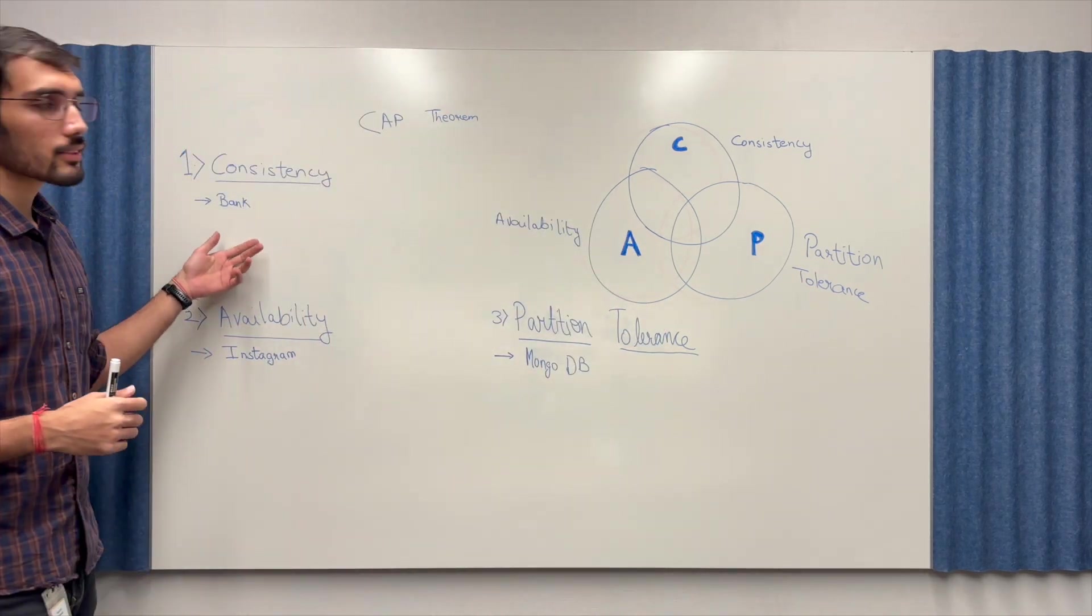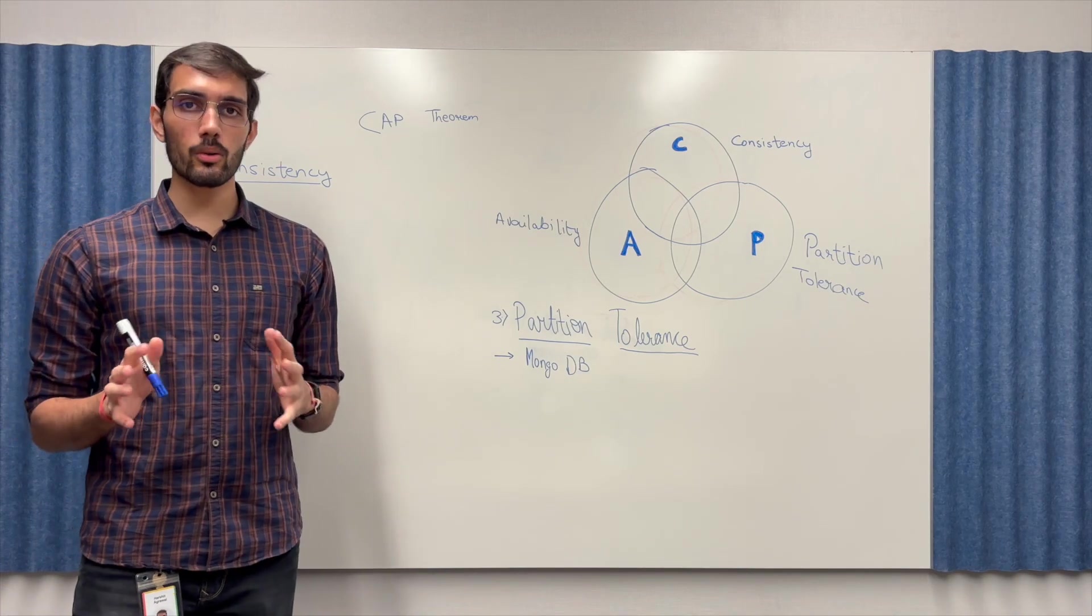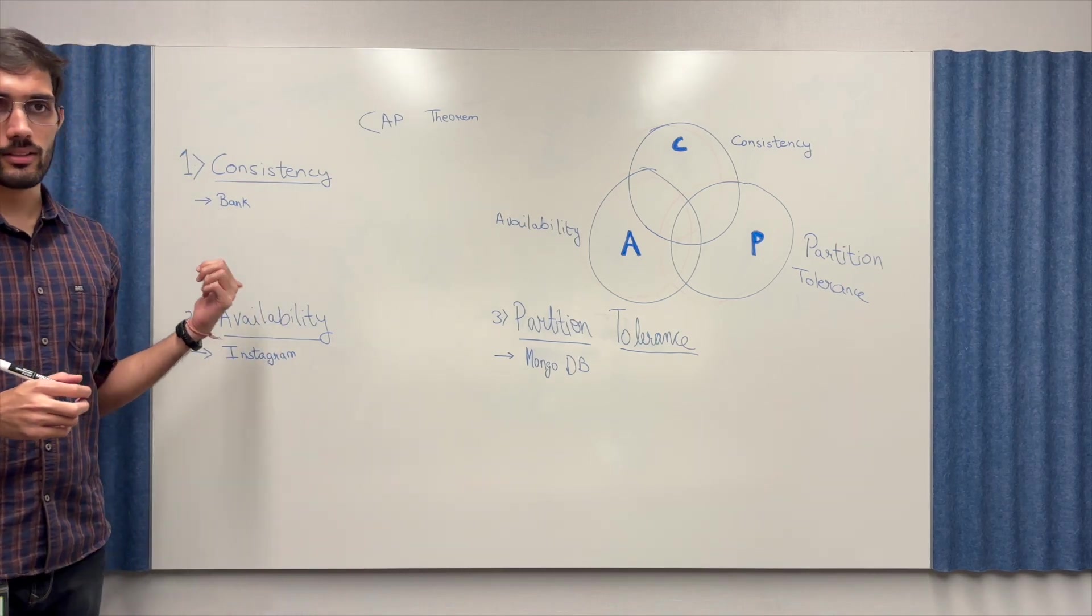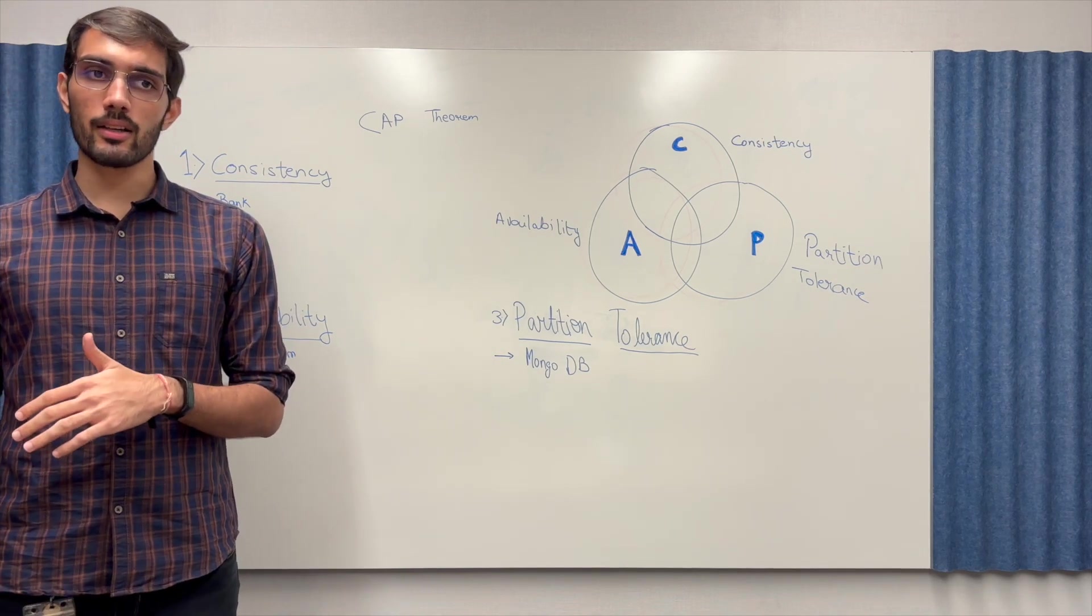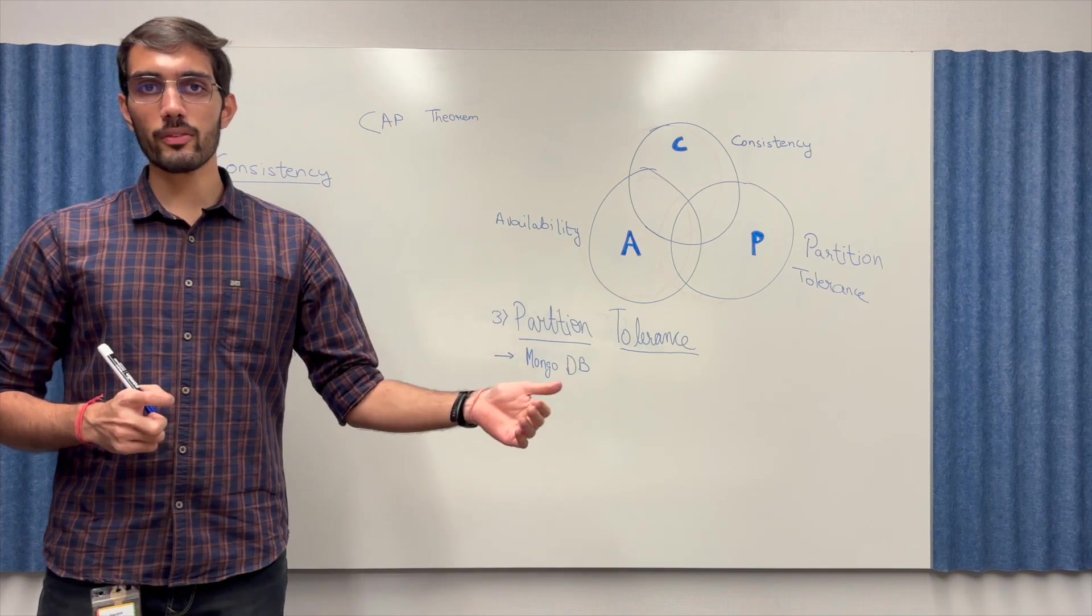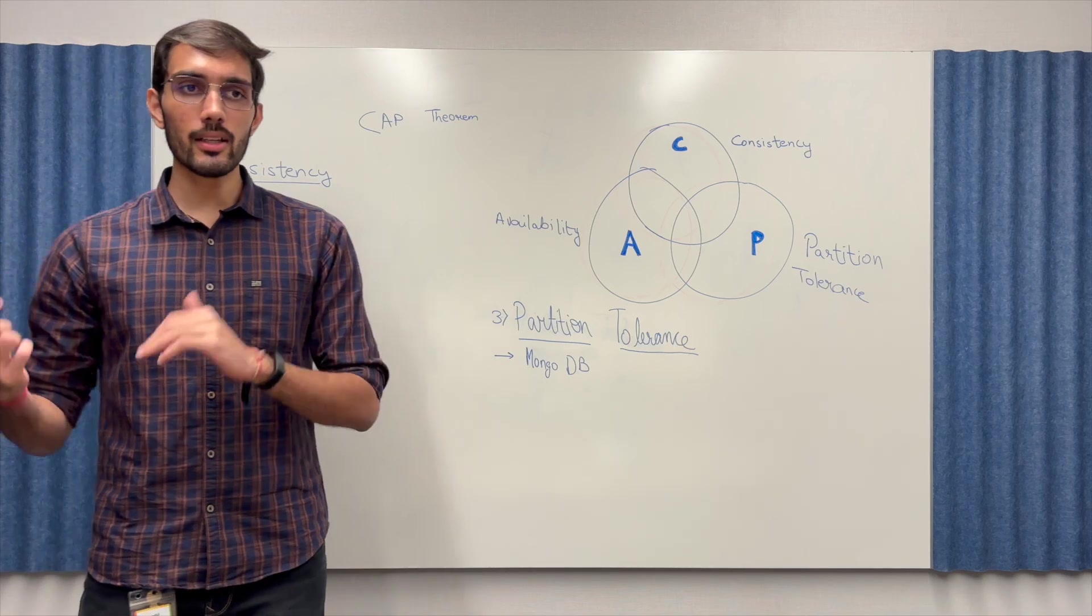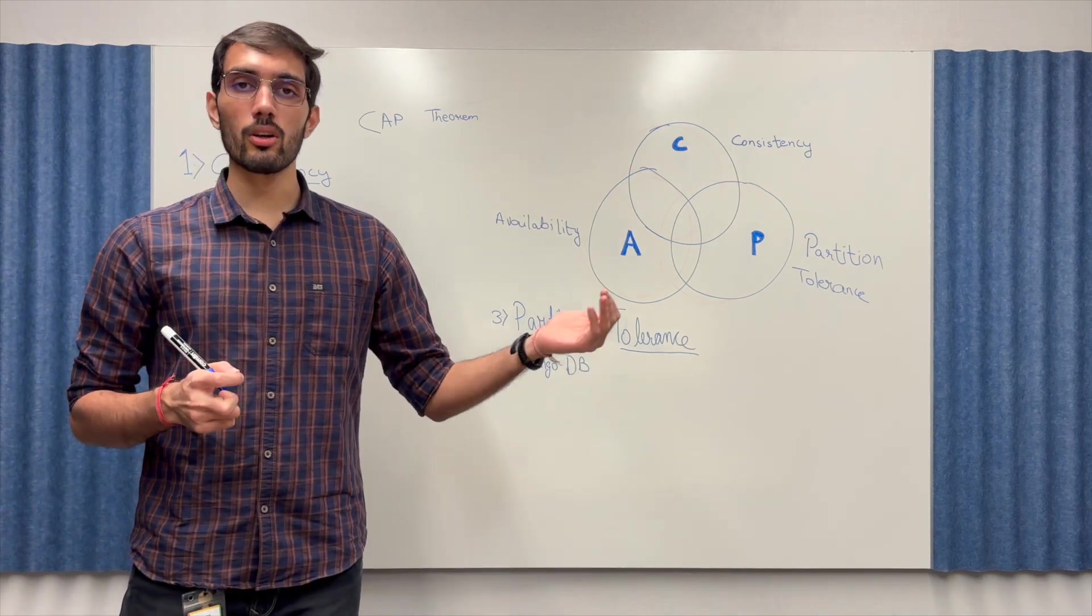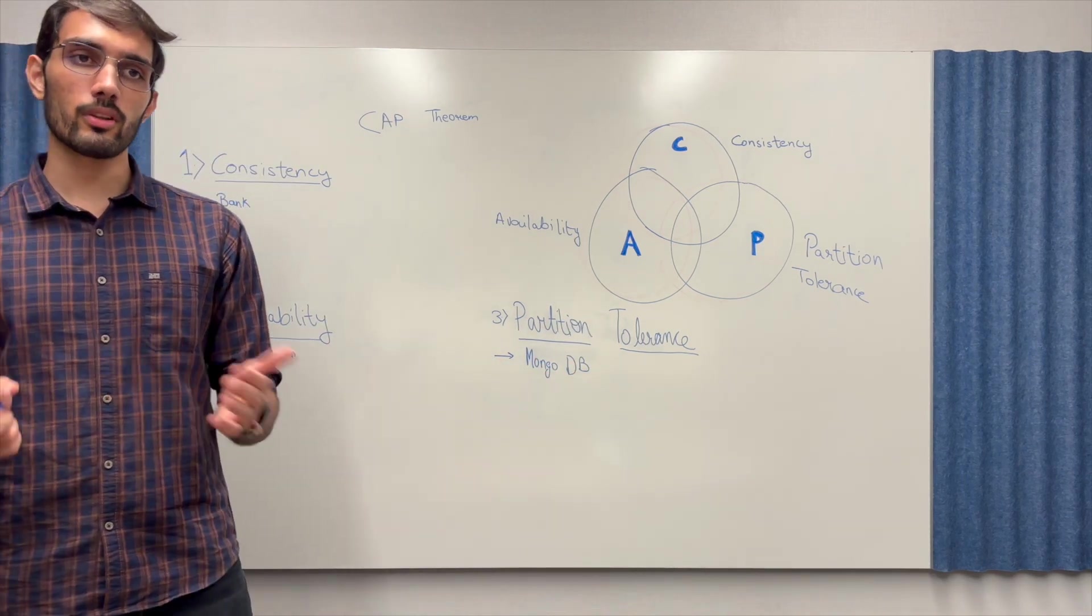Consistency means that everyone who is using the system or sending a request to the system sees the same data. Think of it like a bank account balance. If you are on one branch of the bank and your mother is on the another branch of the bank, both of them should see the account balance as the same one. If you immediately withdraw an amount then the other branch should also see that an amount was withdrawn and no action should be allowed to perform before that.